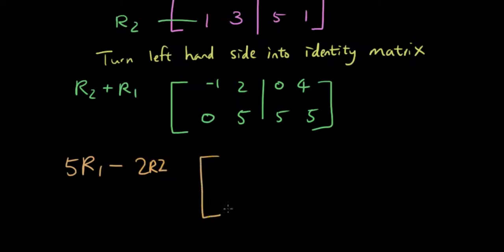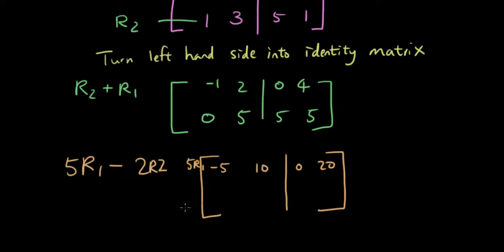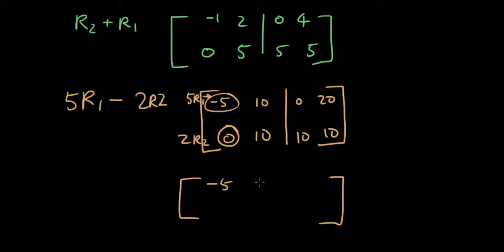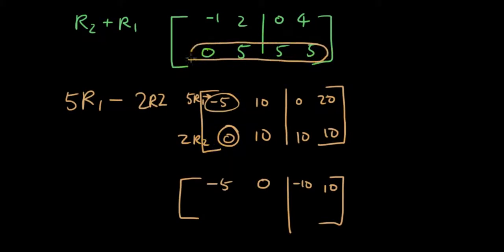So I'm going to do five times row one: that will be negative five, ten, zero, twenty. And then two times row two: that gives me zero, ten, ten, ten. Then five row one minus two row two: negative five minus zero is negative five, ten minus ten is zero, zero minus ten is negative ten, twenty minus ten is ten. So that's my new row one. And my row two I'm just going to write down the original row two: zero, five, five, five.